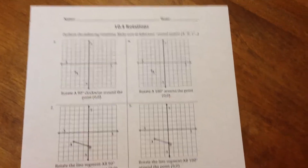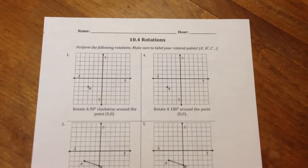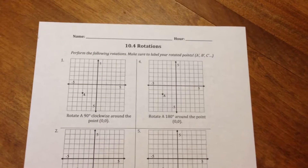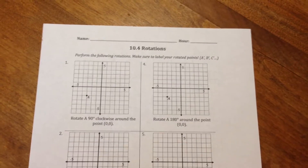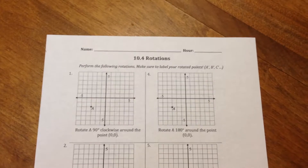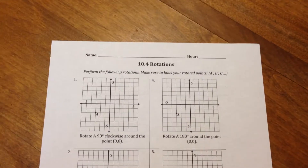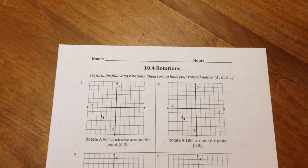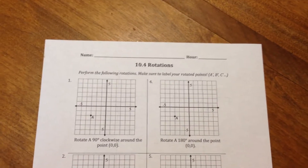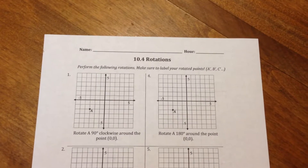Hey everybody, Mr. Morrell here, here to talk to you about homework assignment 10.4. Now, if you remember when talking about rotations in my class, we've talked about three different methods that you could use: the paper turning method, the L method, and finally the slope method. Whichever method works best for you, that's the one you should use. This one is the paper turning method, so if you like the paper turning method, stick around.